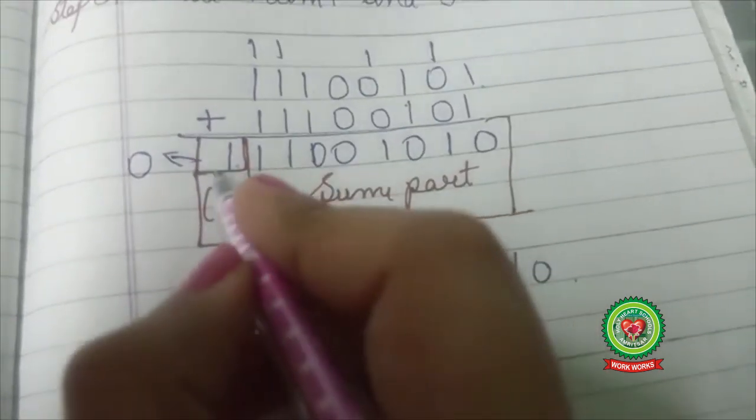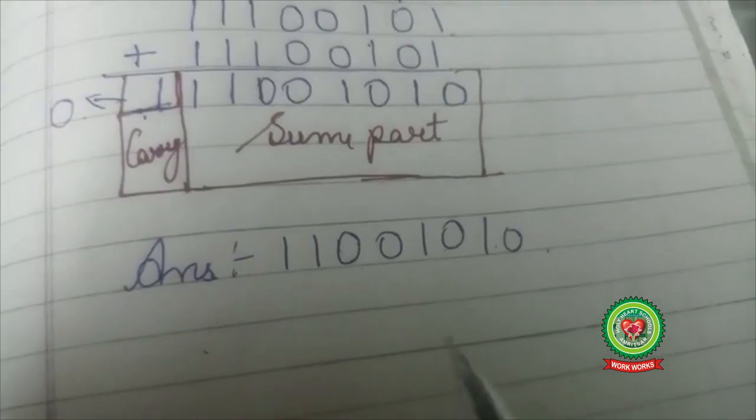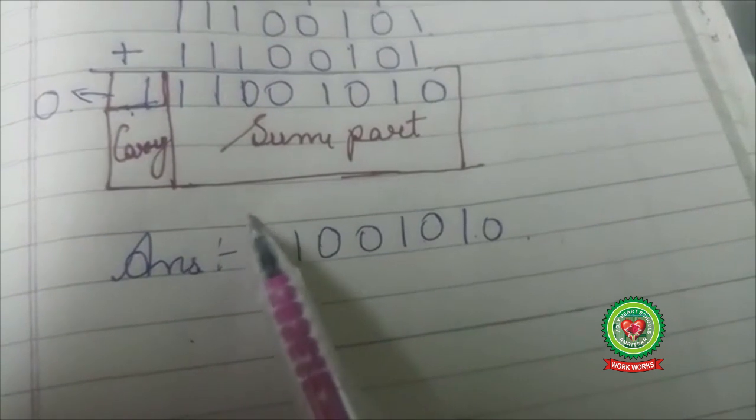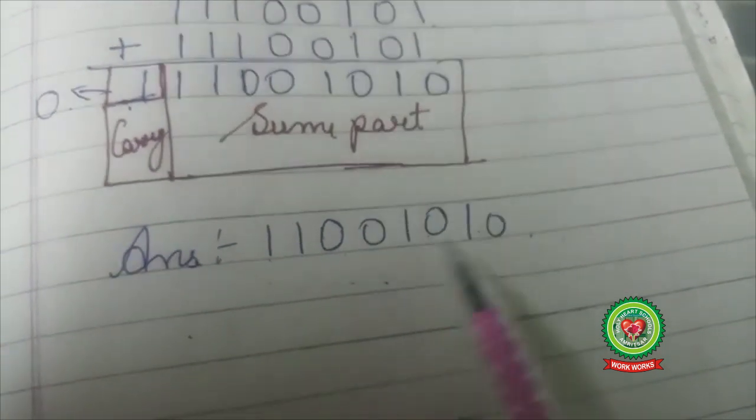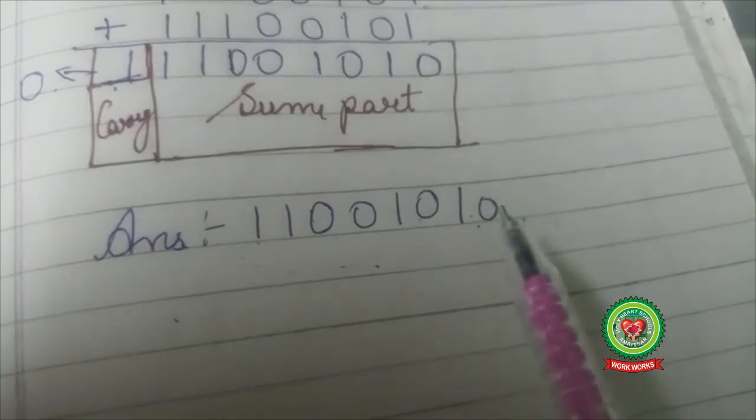But what happens if my carry becomes 0? Then I am going to find the two's complement of this sum part, means first I will calculate one's complement and then add 1 to it.